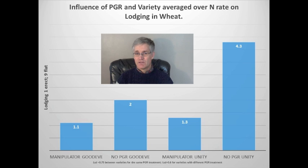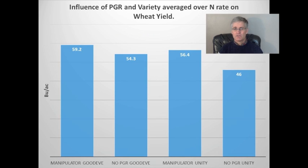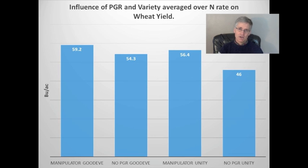Looking at lodging ratings taken on August 15th — where a rating of 1 means the plant is totally erect and a rating of 9 means the crop is flat to the ground — the application of Manipulator improved lodging resistance in both Good Eve and Unity, though the improvement was much greater in Unity. In the end, the use of Manipulator increased the yield of both varieties; however, the yield increase was greater for Unity, which makes intuitive sense since Unity was suffering more lodging without a plant growth regulator. The yield increase was surprising even for Good Eve, as clearly the lodging was causing yield loss even when it didn't appear severe.